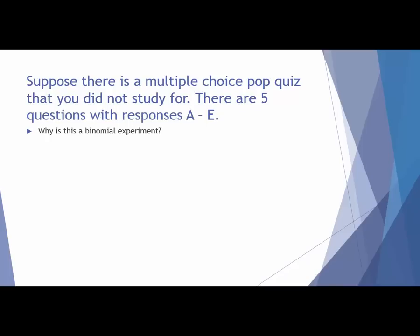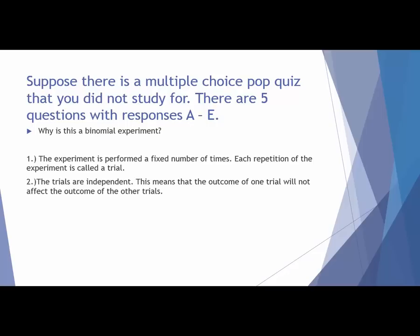Suppose there is a pop quiz that's multiple choice that you did not study for. There are five questions with responses A through E. There are four criteria we have to verify to determine whether this is a binomial distribution. The first one is whether we have a fixed number of trials — there are five different times we're going to perform this experiment, five questions.